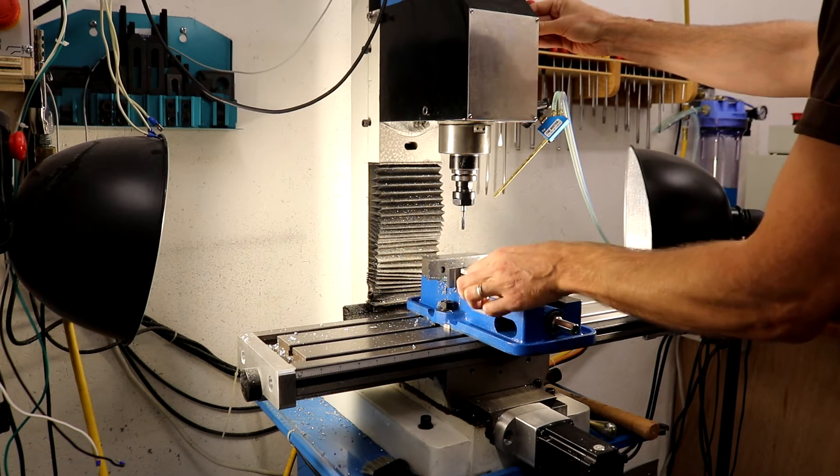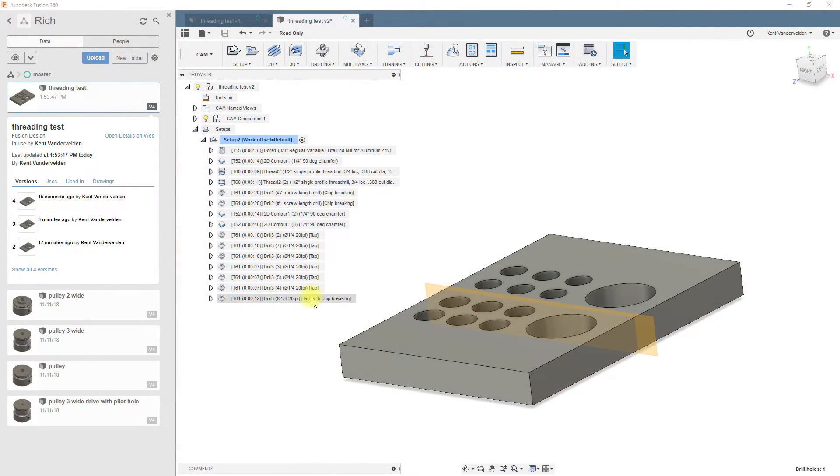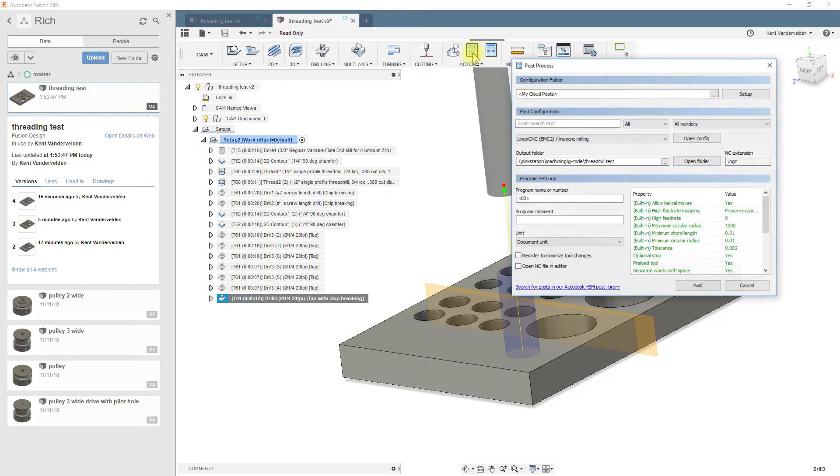Peck tapping may not be available in LinuxCNC, and if generating that code in Fusion 360, there are no warnings shown unless the NC Editor is enabled.